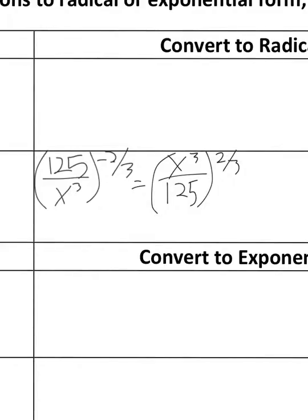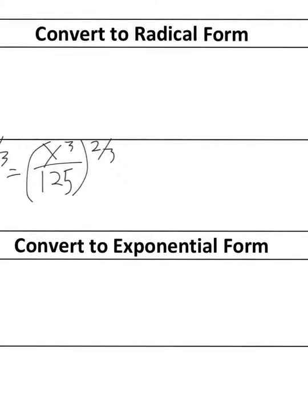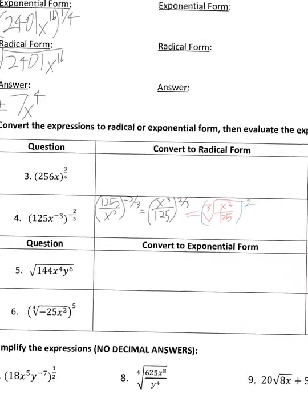Writing it in radical form, remember the bottom number is your root, so you have the cube root of x^3 over 125, and then you're going to square that answer. You can get that answer on your own, but that'll start you off.